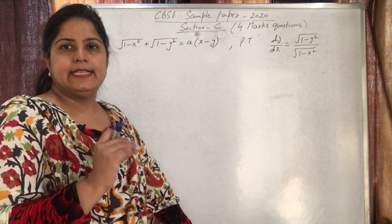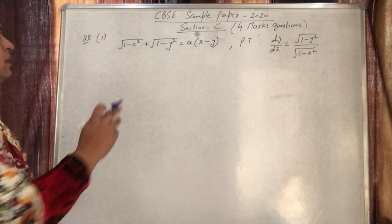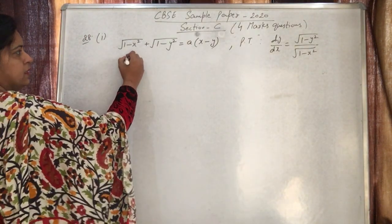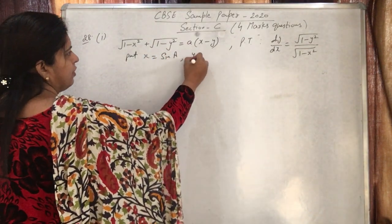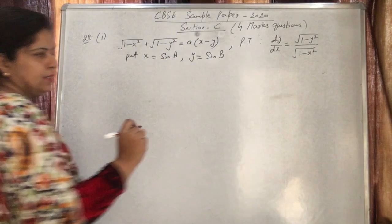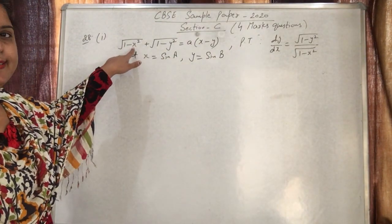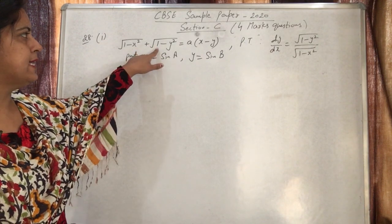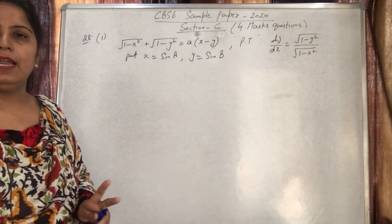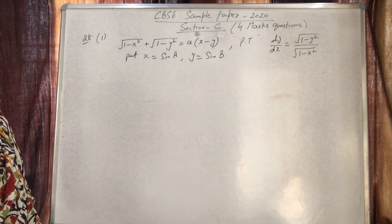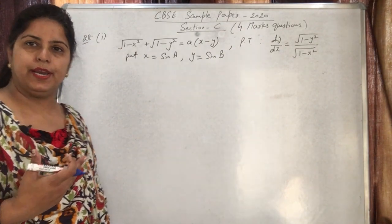We use the substitution x = sin(a) and y = sin(b). The reason: substituting x = sin(a) gives √(1-sin²a) = cos(a), and similarly √(1-sin²b) = cos(b). And sin(a) - sin(b) can be simplified using trigonometric formulas. This makes the equation much simpler.